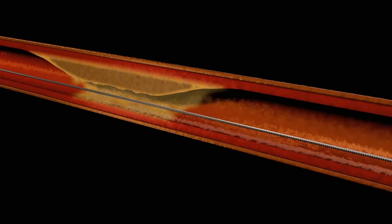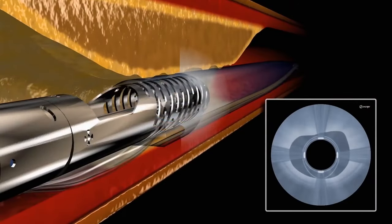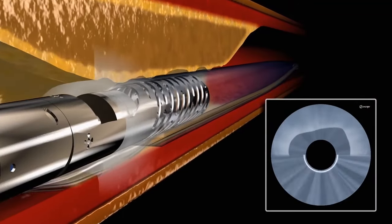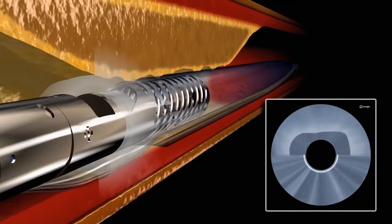The Pantheris device family runs on a monorail system and is indicated for both small and large vessels between 2 to 7 mm in diameter.